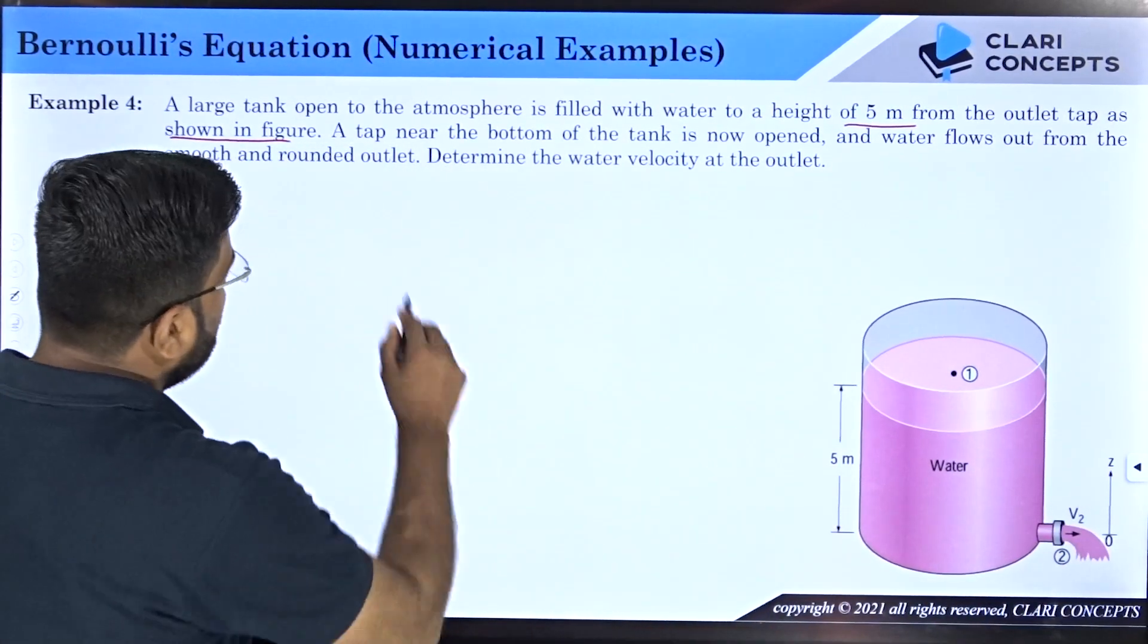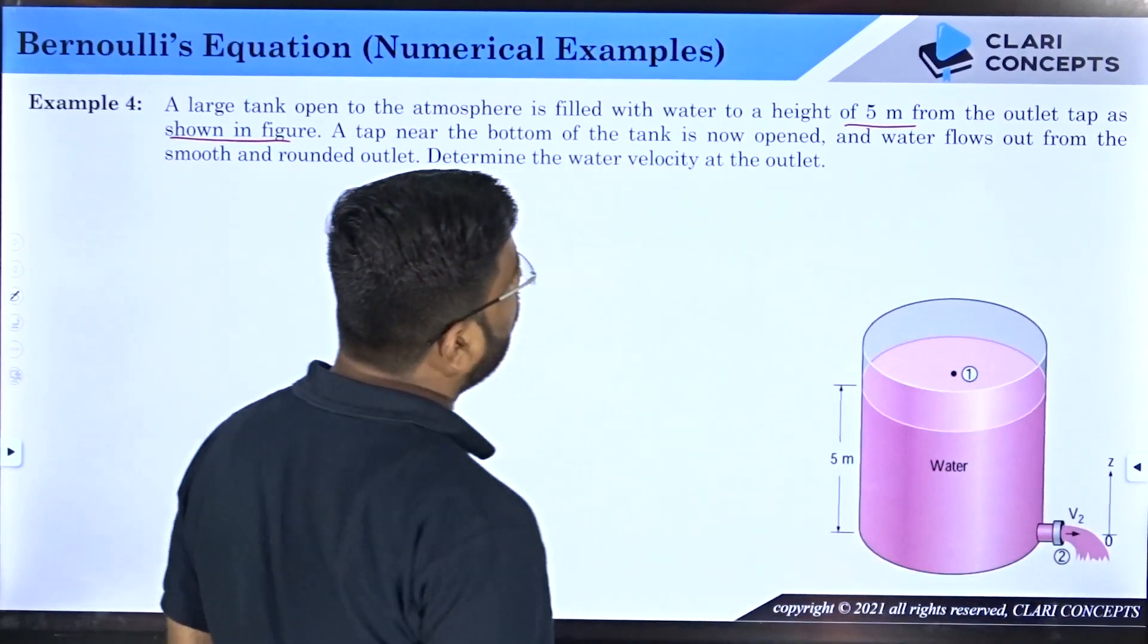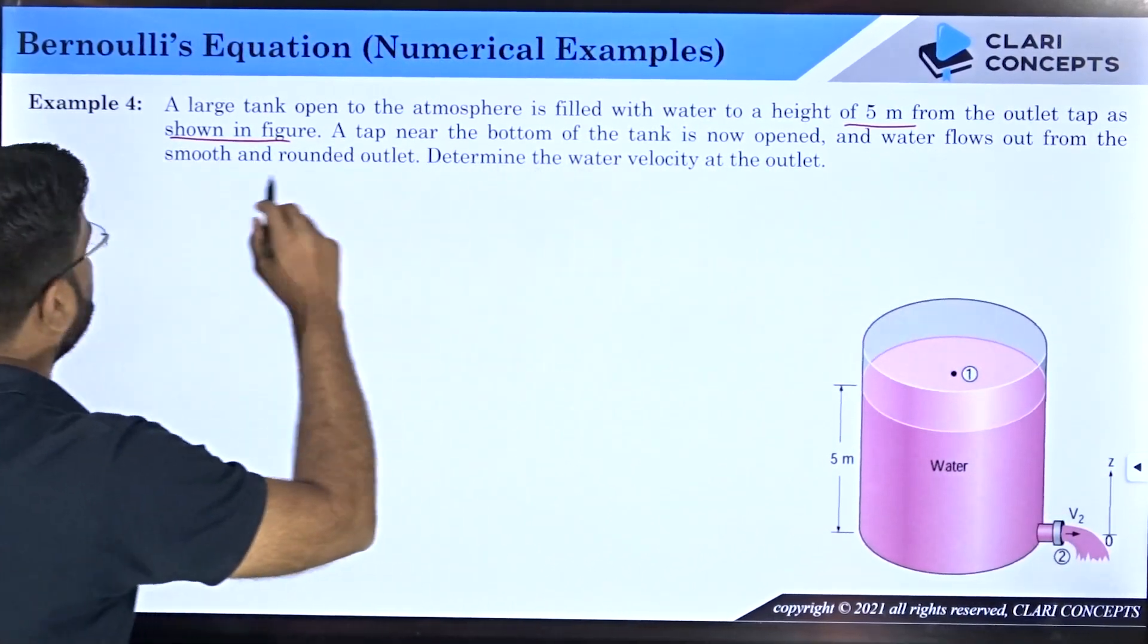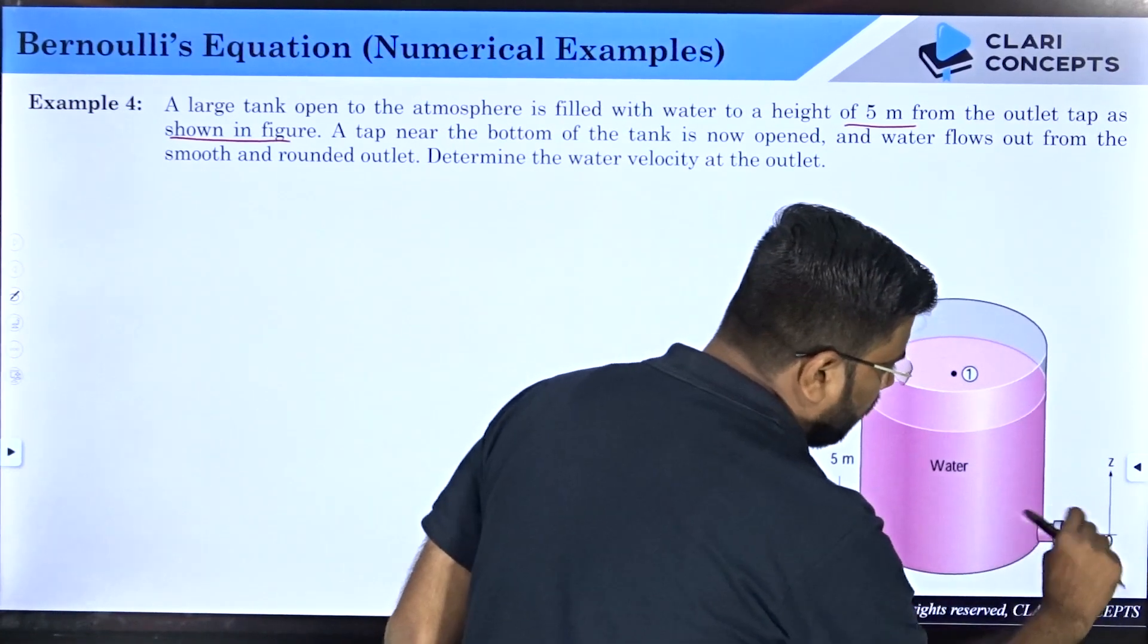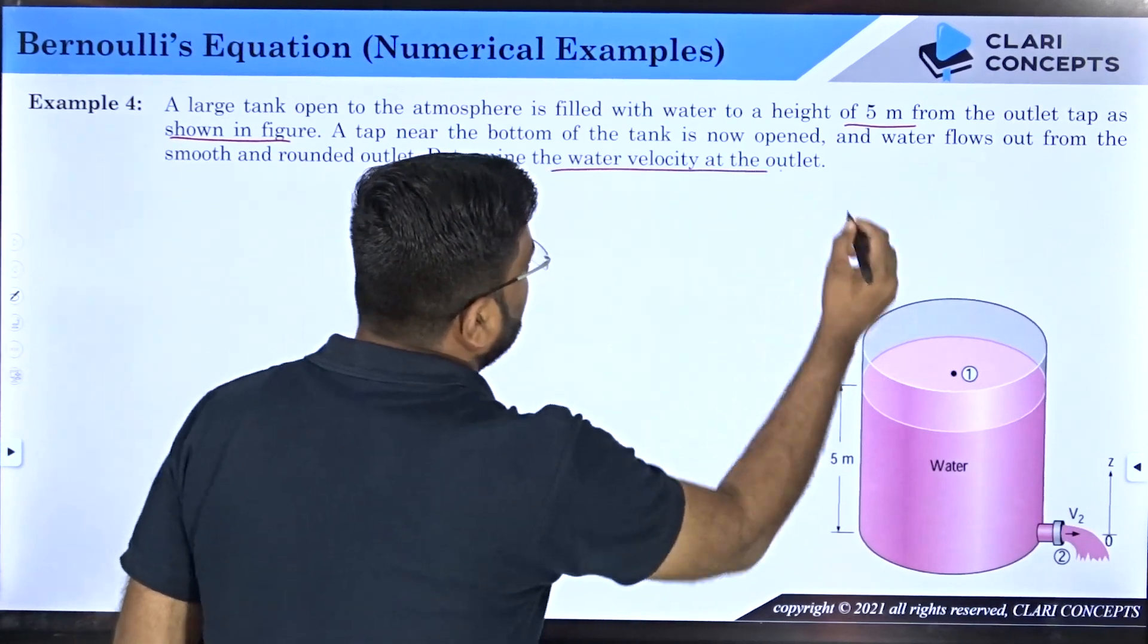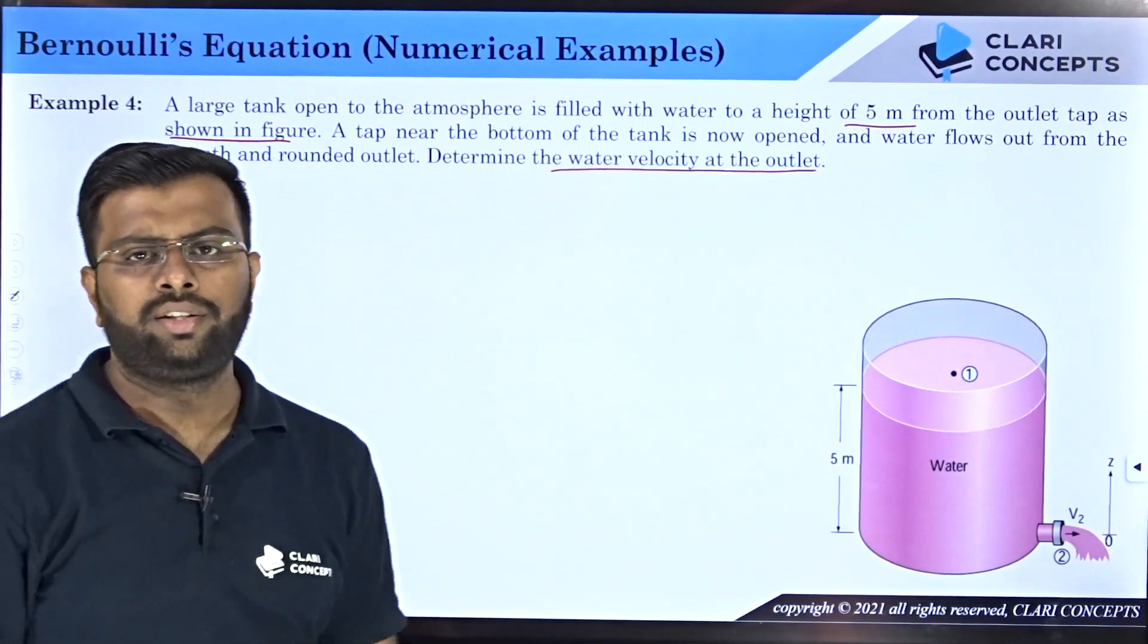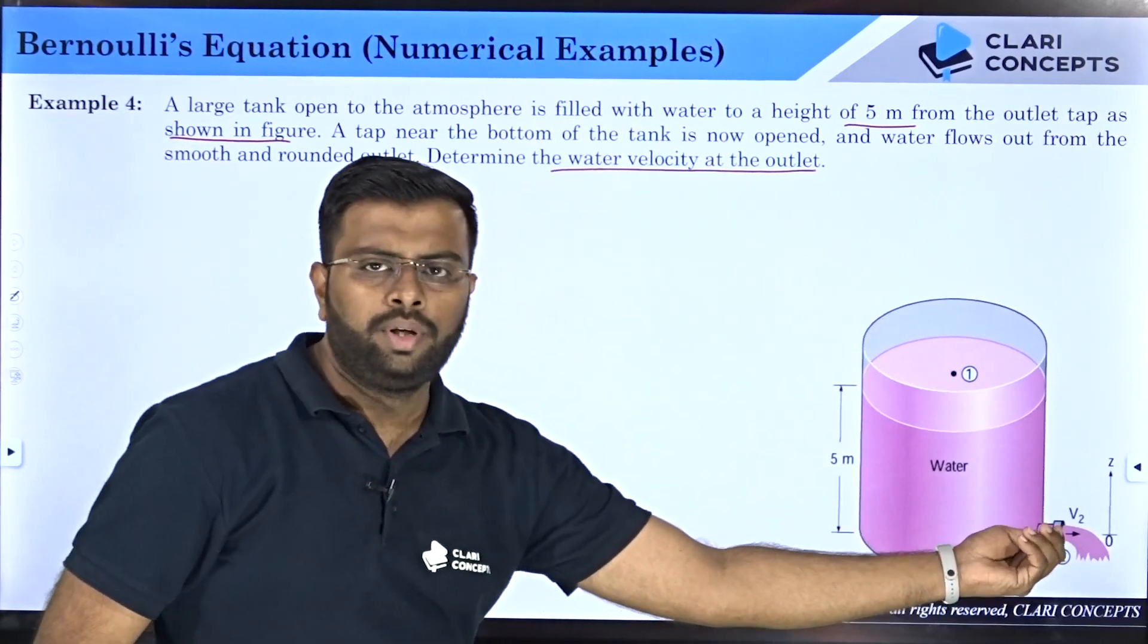Water flows out from a smooth and rounded outlet. Determine the velocity of water. This is a very practical question. Let's say you have an overhead tank in your house and you have the outlet connected at the bottom. If you want to estimate what is the velocity of water coming out theoretically without even doing experiments, you can do a simple example like this.